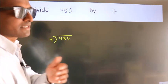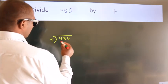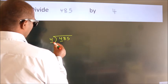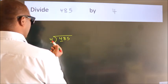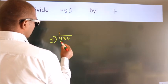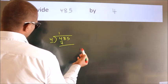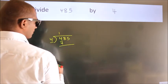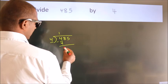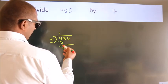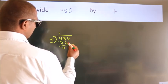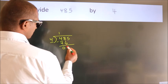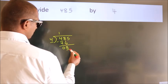Next. Here we have 4. When do we get 4? In the 4 table — 4 once is 4. Now we should subtract. We get 0. After this, bring down the beside number. So 8 comes down. So 8.